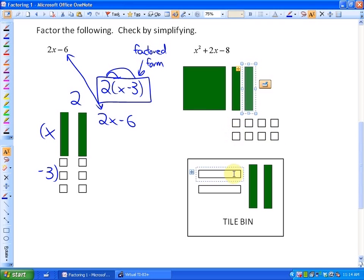In order to do that, what I'm going to do is introduce these zero pairs. If I add two positive x tiles and two negative x tiles to create an area, I haven't changed the actual value. And you'll see how that's useful.